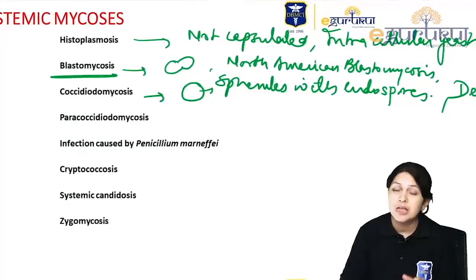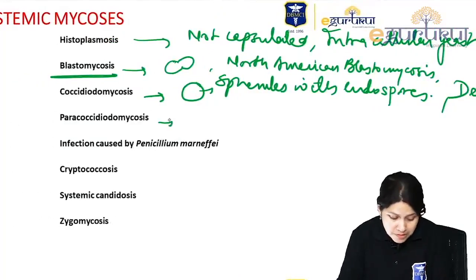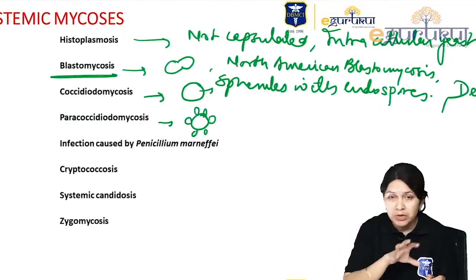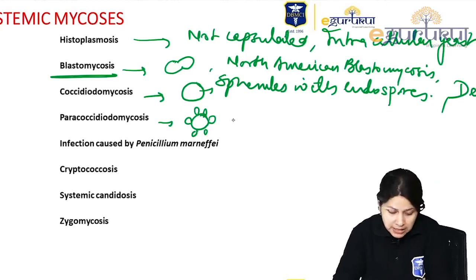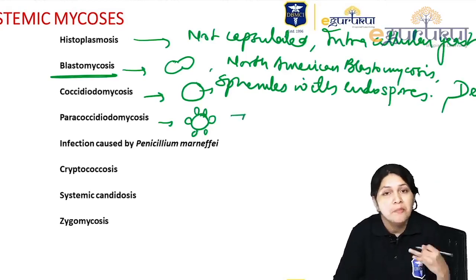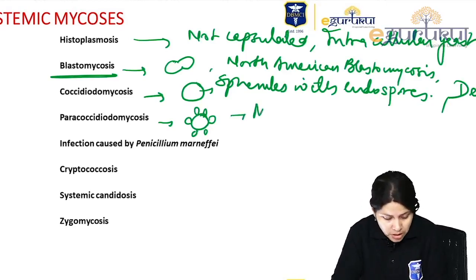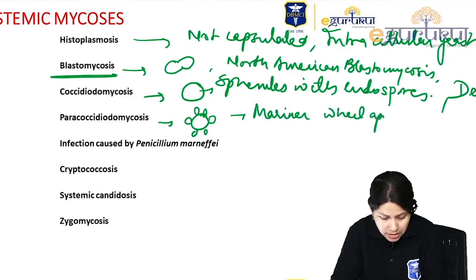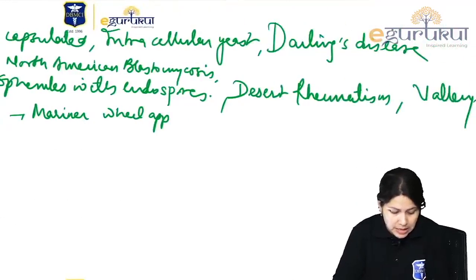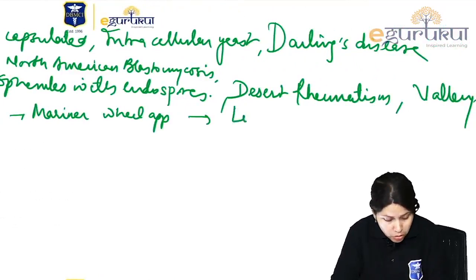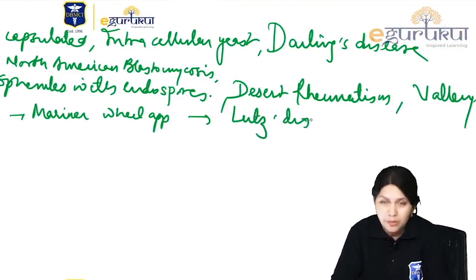Paracoccidioides: a mother yeast cell gives rise to multiple small daughter yeast cells. The multiple budding yeast cells classically give the picture of a mariner's or sailor's wheel appearance, also called a Mickey fin appearance. The disease is classically known as South American blastomycosis or Lutz disease.